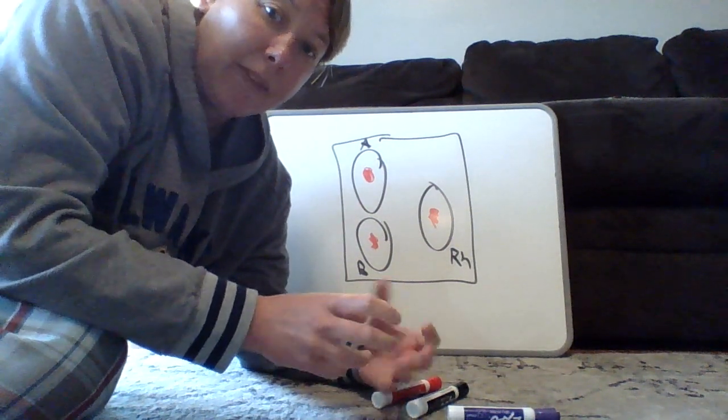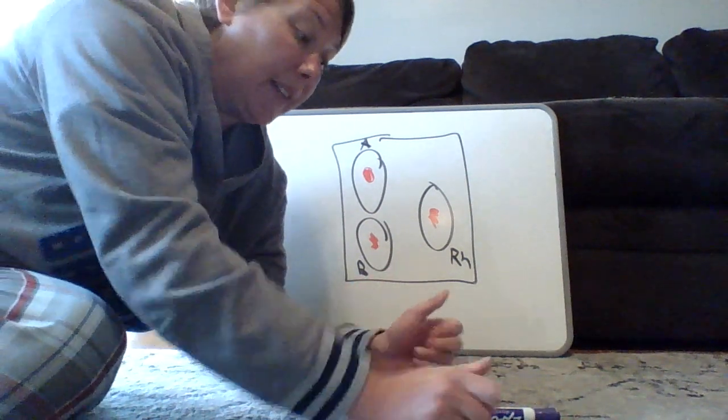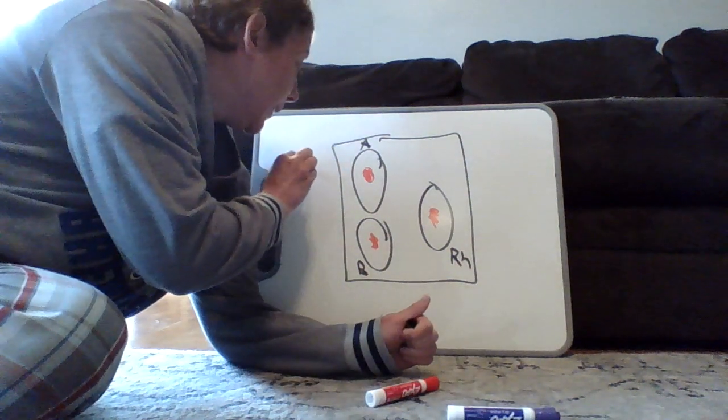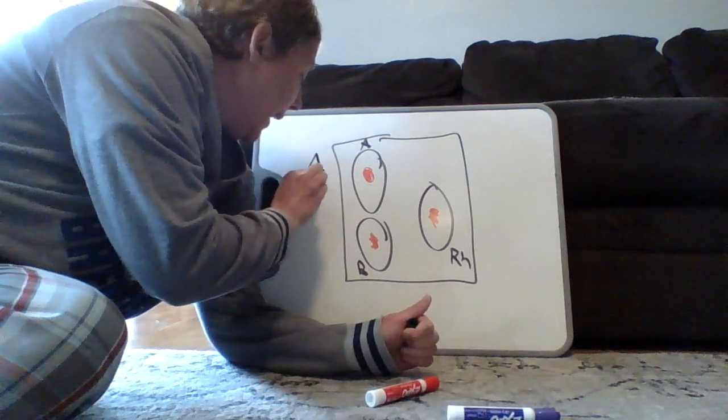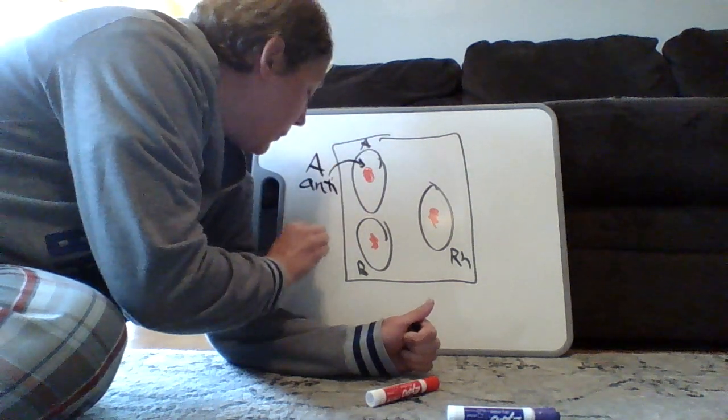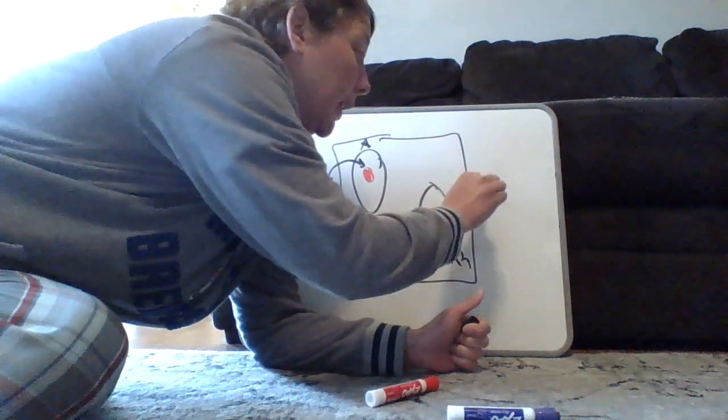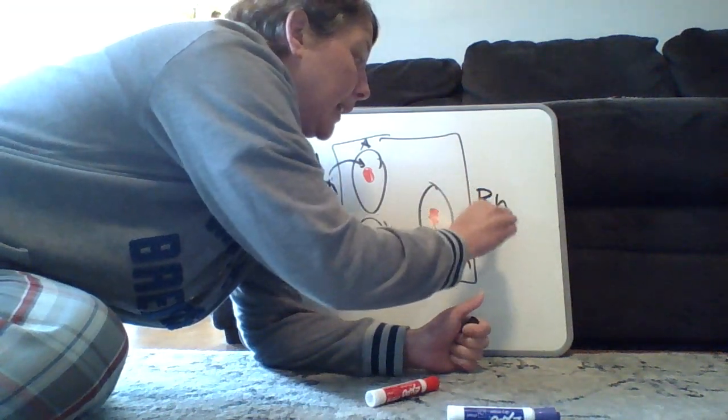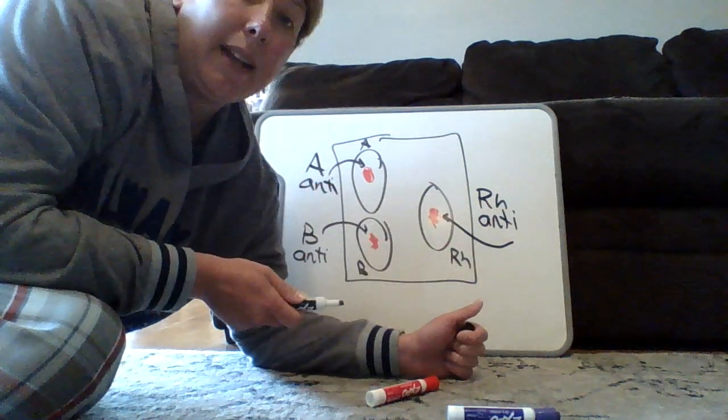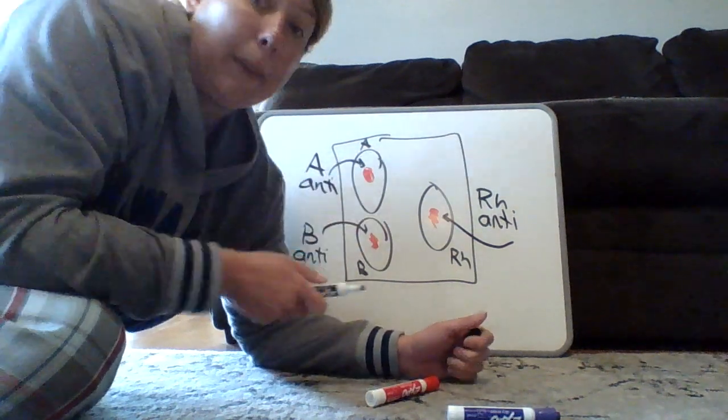So we're going to have little vials of A antibodies, B antibodies, and RH antibodies. And what we're going to do is we are going to put A antibodies into the A well. We're going to put B antibodies into the B well. Then we're going to have RH antibodies and we're going to stick them into the well that is marked RH. And then we're going to take like a toothpick and we're going to mix them up. And then we're going to wait.